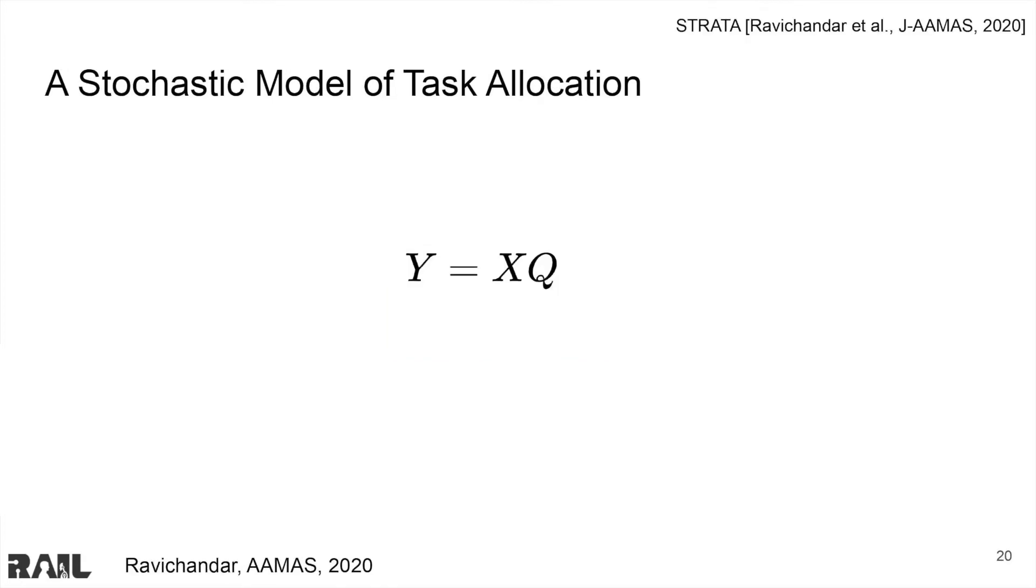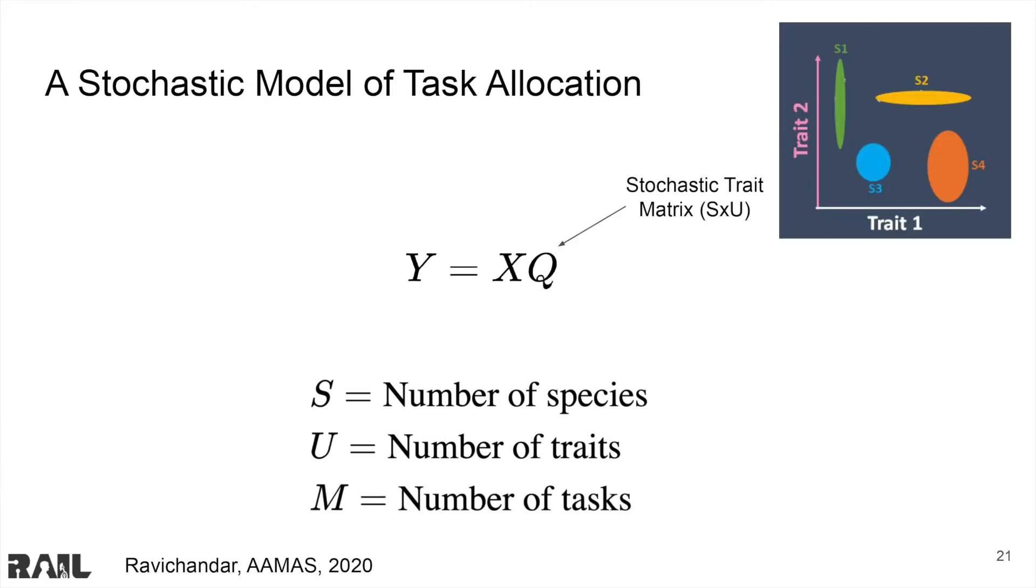Now that we have motivated this work, I will discuss our stochastic model of task allocation. Here, we are dealing with S species or types of robots, U traits, and M tasks. Q is an S by U stochastic trait matrix filled with Gaussian random variables that represent the units of each trait for each species.